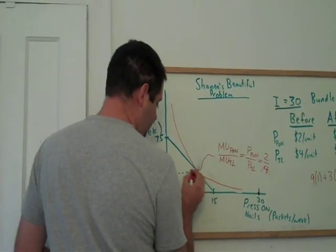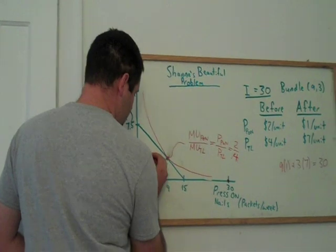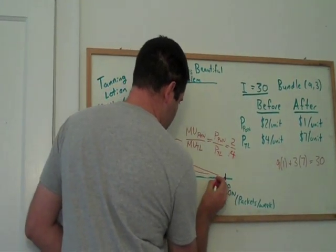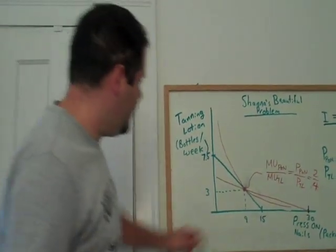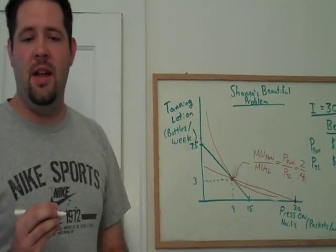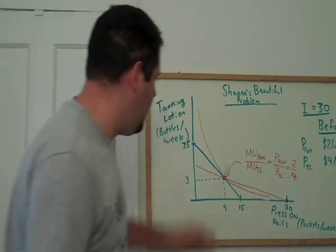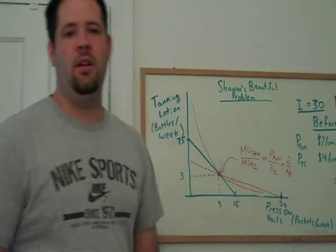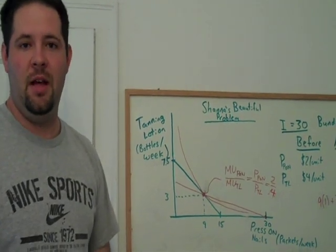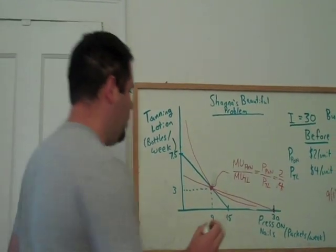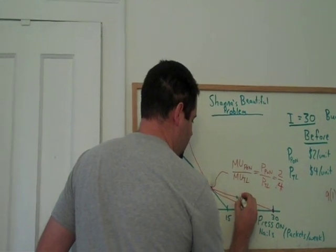This is actually drawn fairly well to scale. Our new budget constraint goes like that. There's an area of bundles now that are affordable above Shannon's old indifference curve. There are bundles that give her more utility available to her at the new prices. And so she'll go and pick one of those.